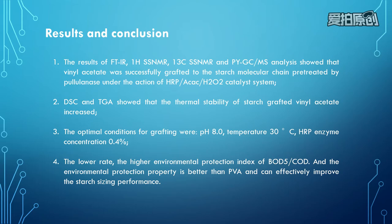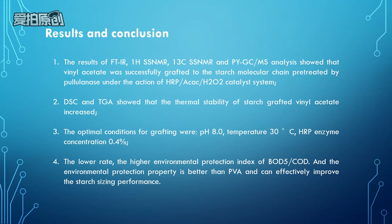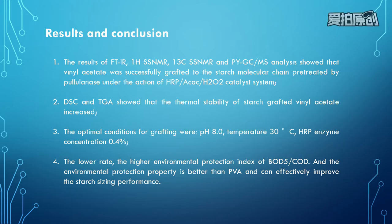Here are the results and conclusions. The results from the different analysis methods showed that vinyl acetate was successfully grafted to the starch molecular chain, pretreated under the action of the HRP-H2O2 catalyzed system. The optimal conditions for grafting were pH 8, temperature 30 degrees, and HRP enzyme concentration 0.4%. The lower grafting rate, the higher environmental protection index of BOD5 and COD. The environmental protection property of this grafted starch sizing agent is better than the PVA sizing agent, and it can effectively improve the starch sizing performance.